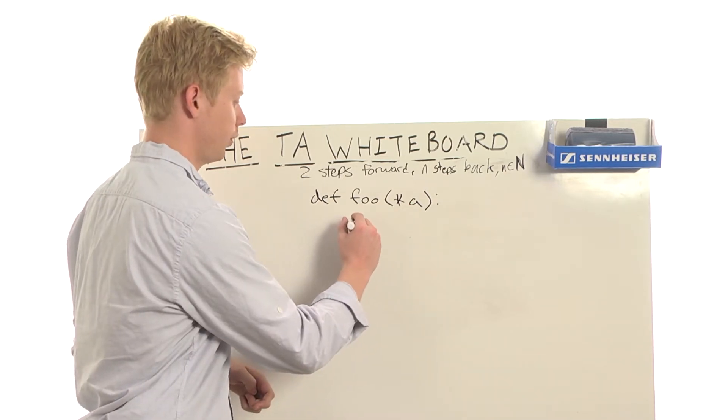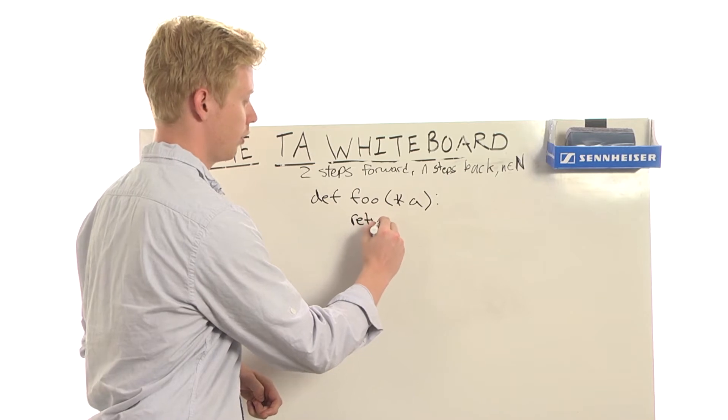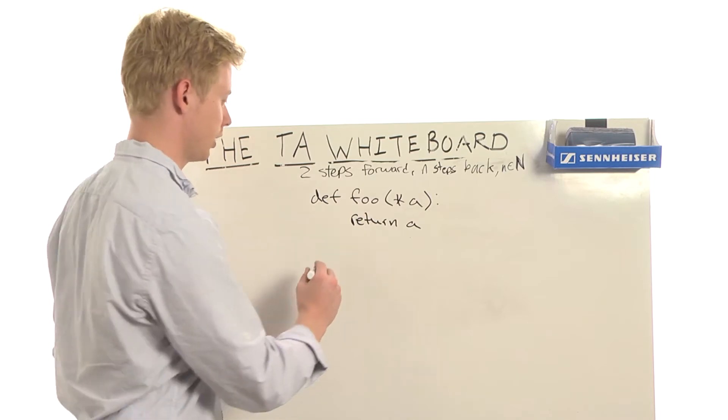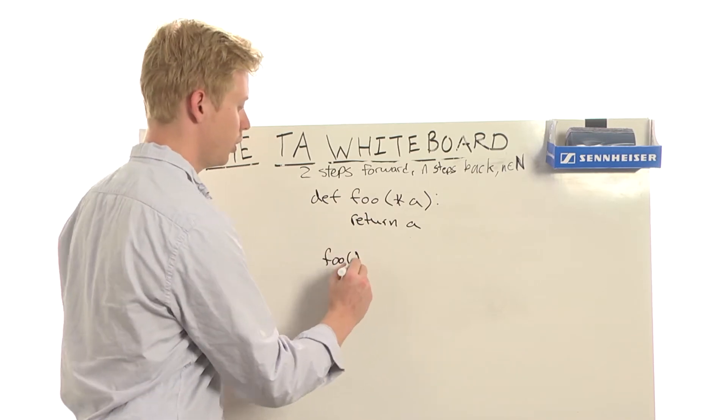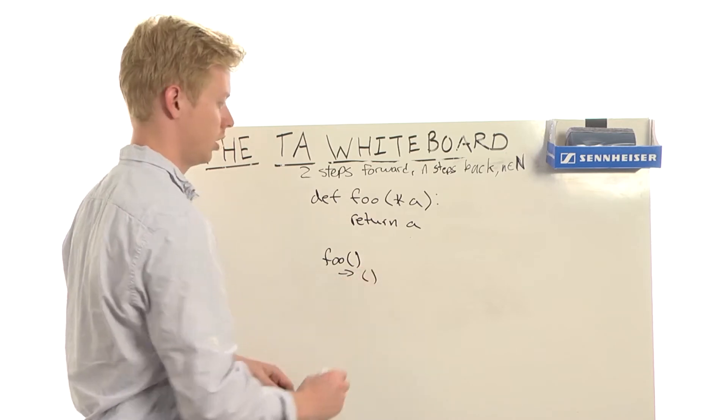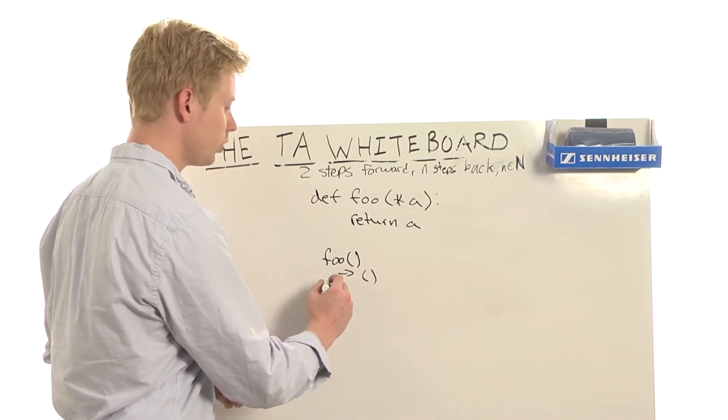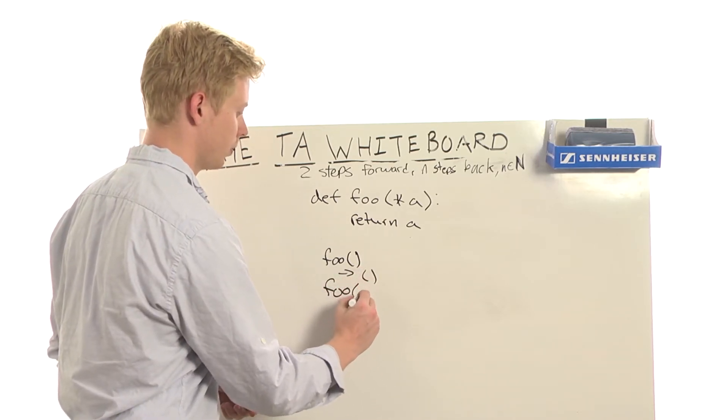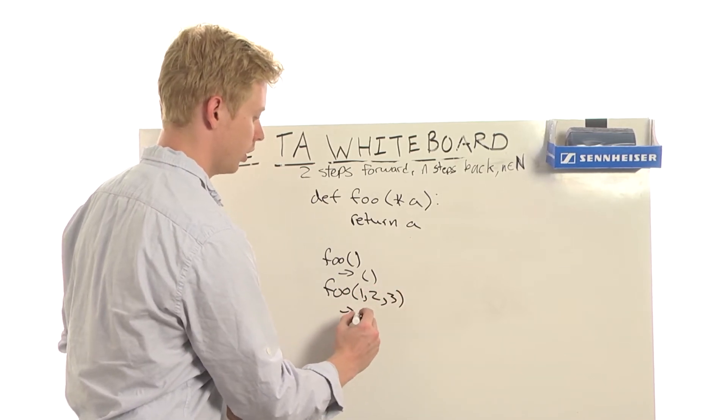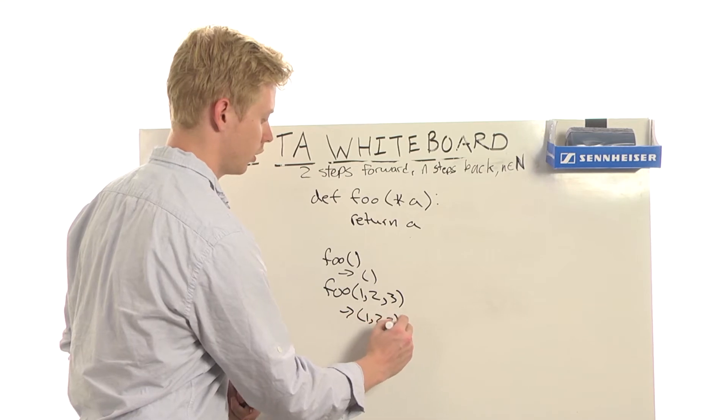So that means in this function foo, we have a variable a. And if I were to return a and call foo, it would look something like this. So if I called foo with no arguments, it would return just an empty tuple. If I were to call foo with the arguments 1, 2, 3, it would return a tuple of 1, 2, 3.